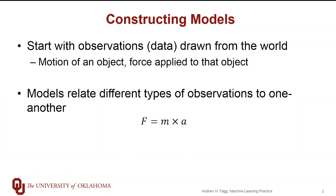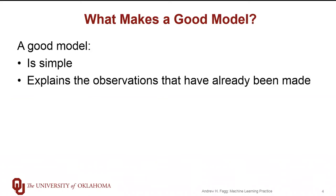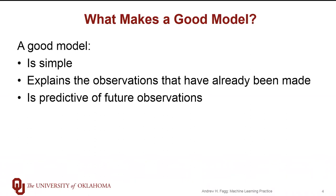Now for a given data set, there are lots of different models — in fact, there are an infinite number of models that one could select that explain those data. And so we have to have some notion of what we mean by a good model. A quality model is one that is simple, and this is certainly important from the perspective of understanding these phenomena, but it's also going to be important as we start to construct these models automatically. Of course, we want our models to explain the observations that we've already made. But even more importantly, we want the models to be able to make predictions about observations that we might take in the future.